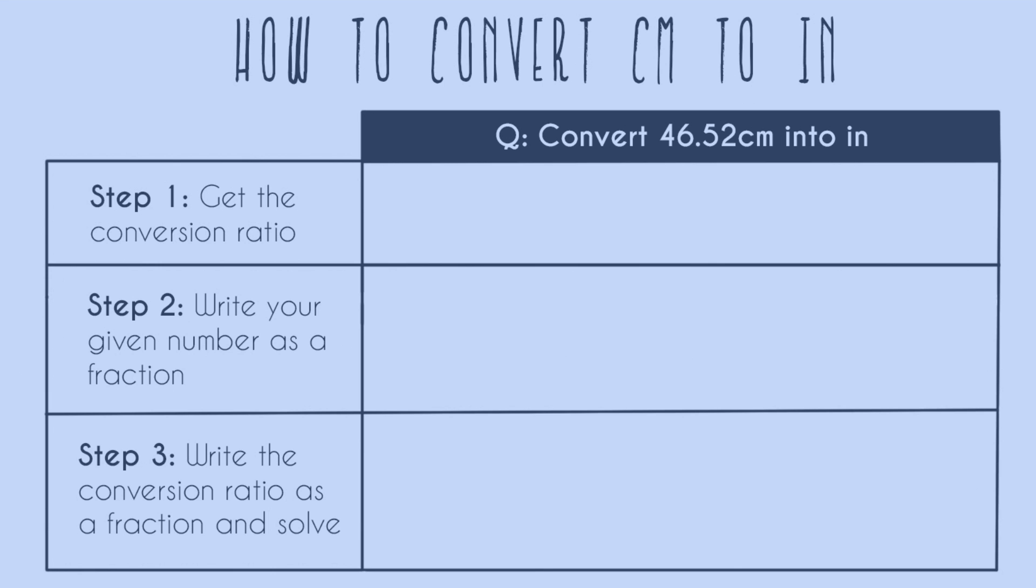Step one is to get the conversion ratio. So for all these problems, we're going to have two units, and we have to know how many of one unit equals how many of another unit. This comes from memorization or just looking it up. In this case,